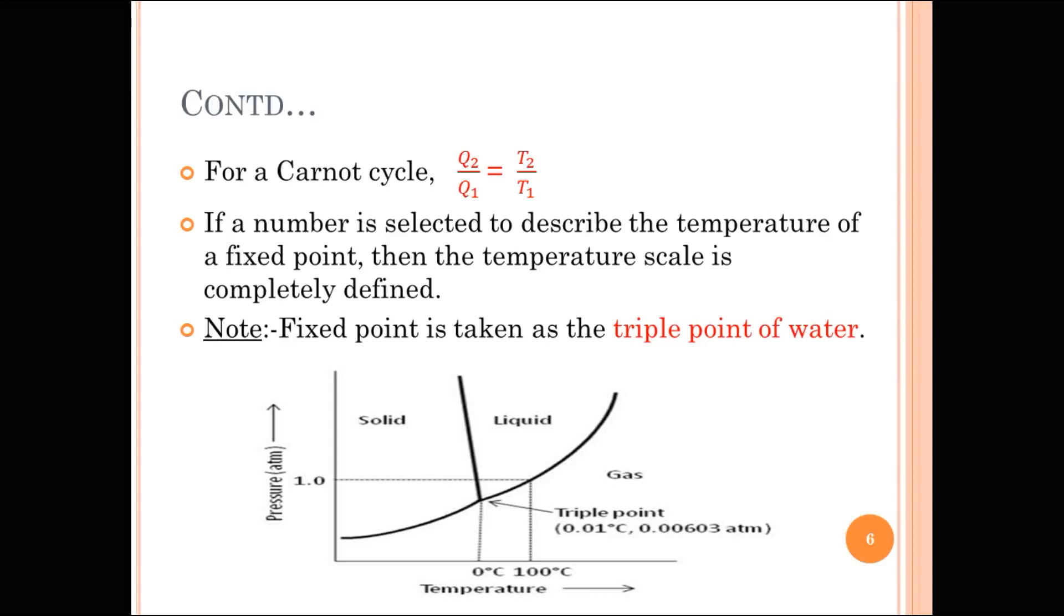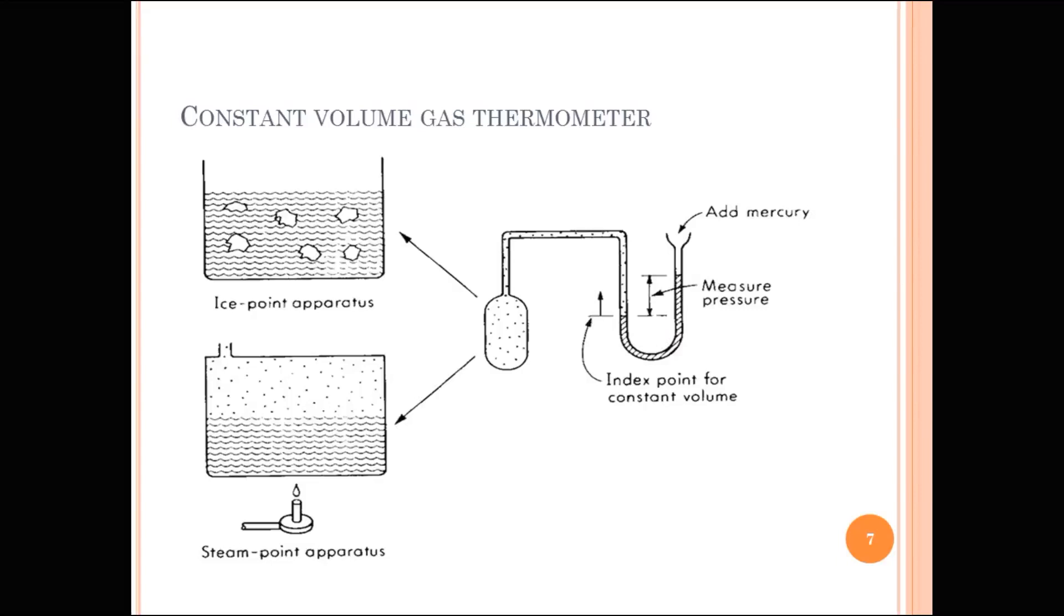If a number is selected to describe the temperature of a fixed point, then the temperature scale is completely defined. The fixed point is taken as the triple point of water. What do you mean by triple point of water? Triple point is the state at which solid, liquid and vapor phases are in equilibrium. So, this Kelvin absolute thermodynamic scale is ideal because it is independent of any material properties.